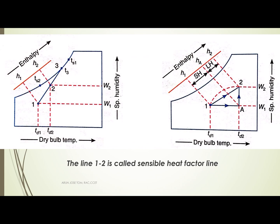On the psychrometric chart, the 1-2 process shows the specific humidity increasing along with temperature. The sensible heat added is represented by Ha - H1, and the latent heat is represented by H2 - Ha.